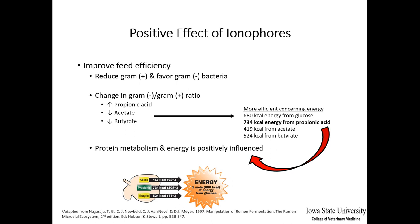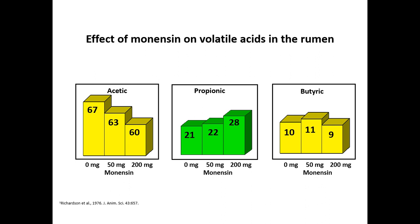The positive effects of ionophores take place by reducing gram-positive bacteria in favor of gram-negative ones. That results in more propionic acid formation and less acetic acid and butyric acid. The propionic acid in the rumen gets absorbed, reaches the liver, and yields more glucose molecules, therefore producing more kilocalories. When we give monensin, propionic acid increases while the other two volatile fatty acids either stay the same or decrease — a shifting from acetic and butyric acid towards propionic acid.